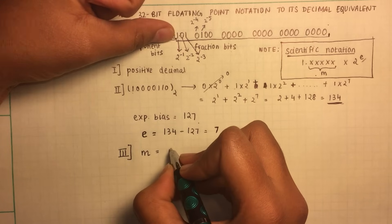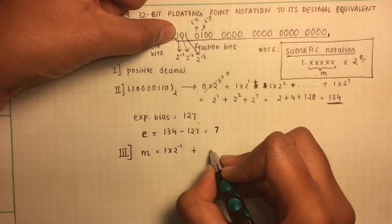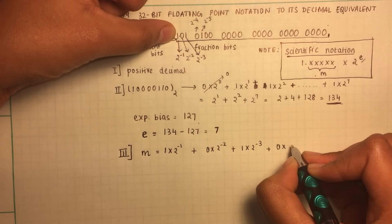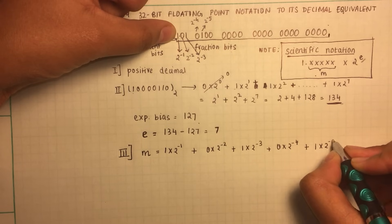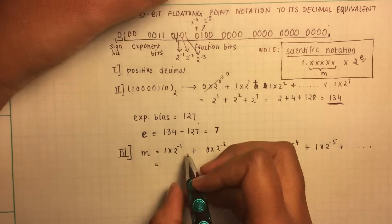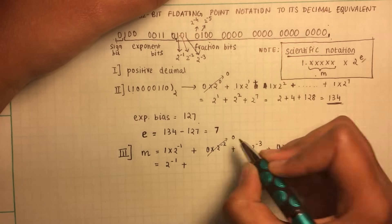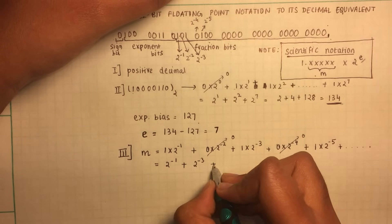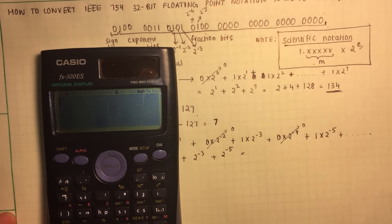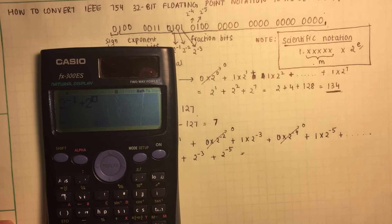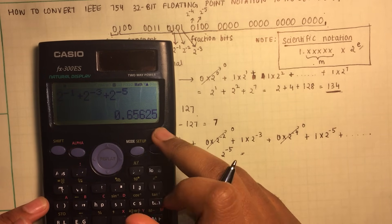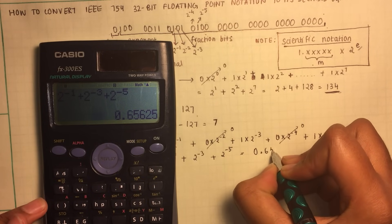So the mantissa in this case would be 1 times 2 to the negative 1, plus 0 times 2 to the negative 2, plus 1 times 2 to the negative 3, plus 0 times 2 to the negative 4, plus 1 times 2 to the negative 5, and so on. But we do not need to consider the remaining values because we know those will be zeros. So this will be 2 to the negative 1, plus 2 to the negative 3, plus 2 to the negative 5. And you would get the value as 0.65625. So that forms the mantissa.